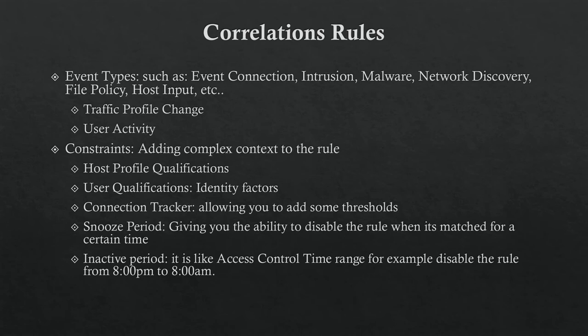The snooze period gives you the ability to disable the rule when matched for a certain time. For example, if the snooze period is 10 minutes and a violation happens at minute one, it can still generate an alert. But when it reaches minute 10, the rule will be off for that period. The active period is like a time schedule for your rule — you define from what time to what time this rule should be active.